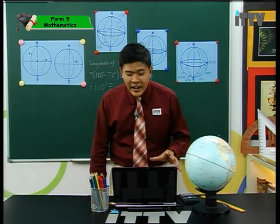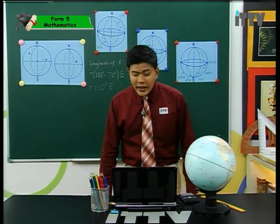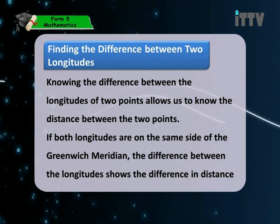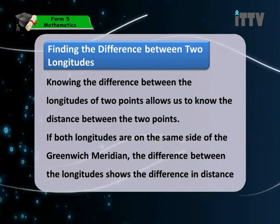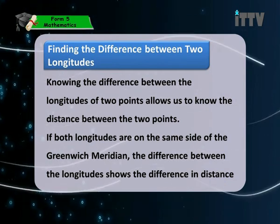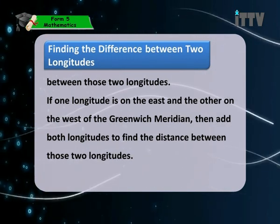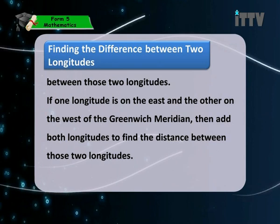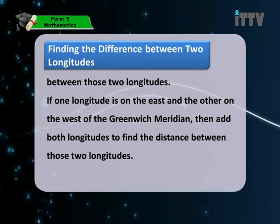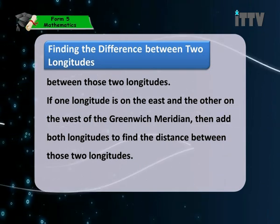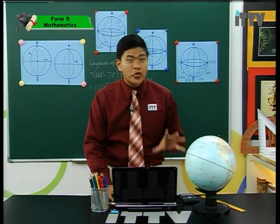Now let's look at finding the difference between two longitudes. Knowing the difference between the longitudes of two points tells us the distance between them. If both longitudes are on the same side of the Greenwich meridian, subtract the two angles to find the difference. If one longitude is on the east and the other on the west of the Greenwich meridian, add both longitudes to find the difference.